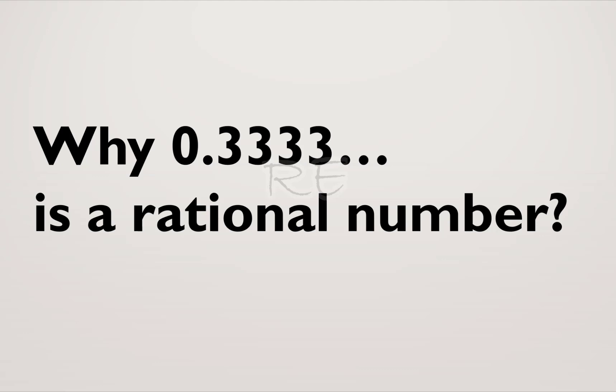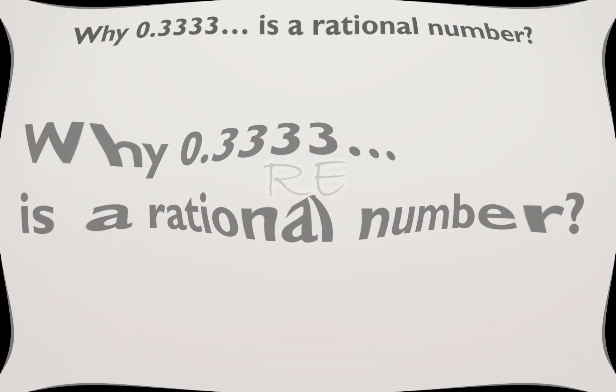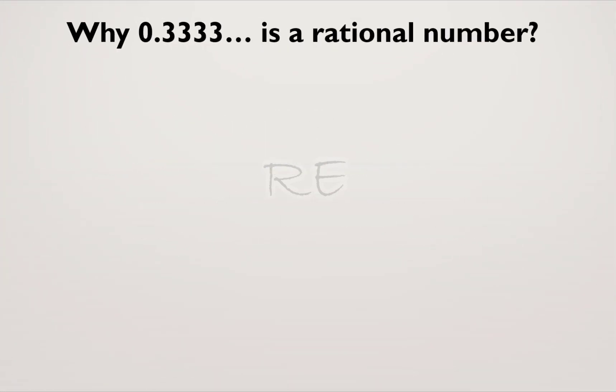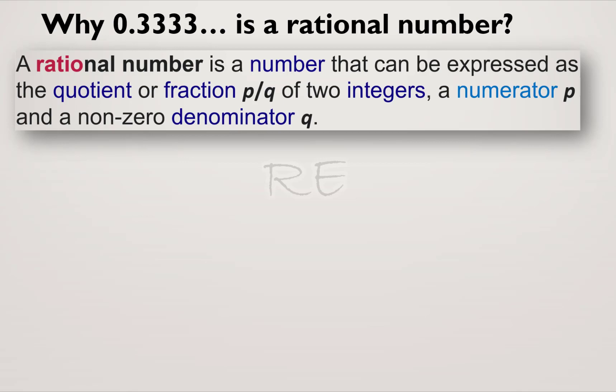Why is the repeating decimal 0.333 a rational number? Well, a rational number is a number that can be expressed as the quotient of two integers, p over q with q a non-zero number.